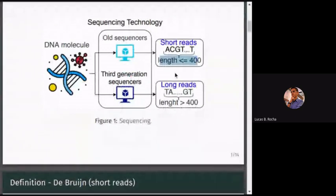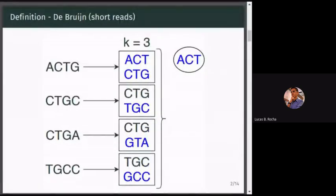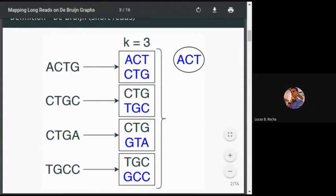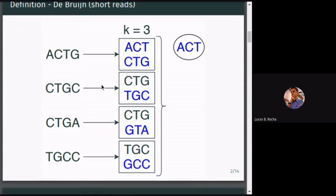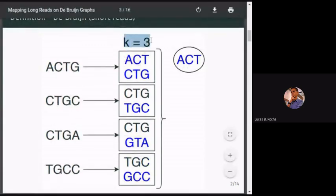For our work, we have a de Bruijn graph to represent our short reads. Here we have an example of what is the construction of the graph. But for our problem we have already received the graph ready as input. To build the graph we need a k parameter to determine the length of each segment. For example, k equals 3. For the first sequence we have two segments of length 3: ACT and CTG.